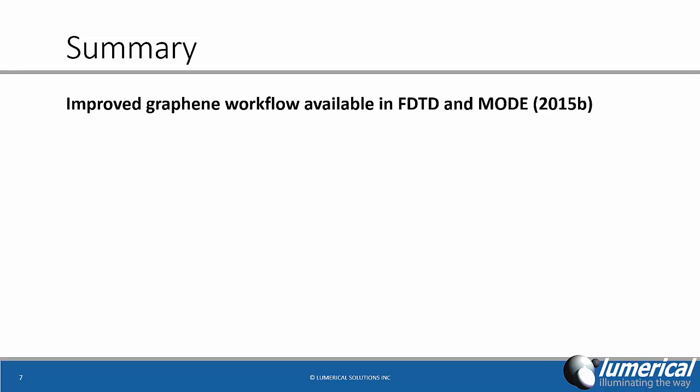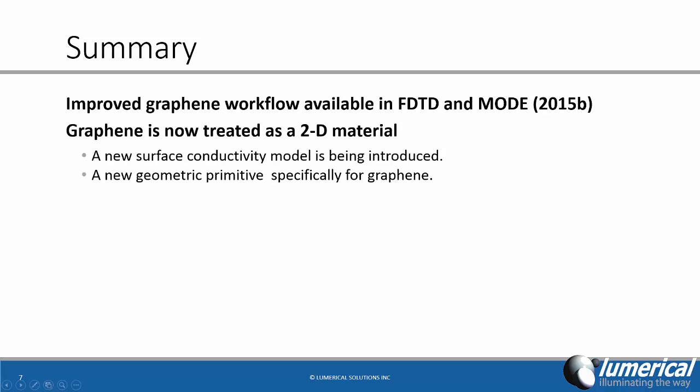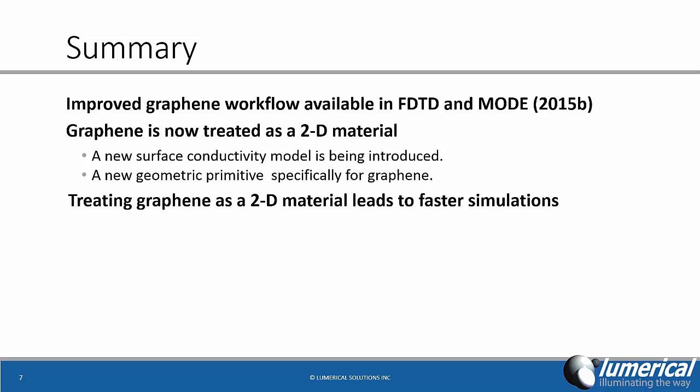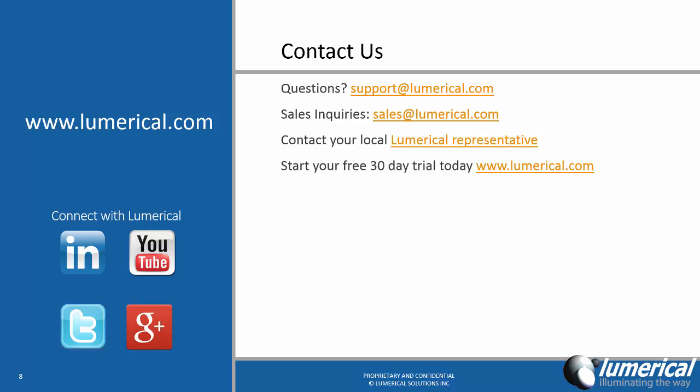In summary, a new graphene modeling workflow will be available in the 2015b releases of FDTD and mode. In the new workflow, graphene is now treated as a two-dimensional material with a surface conductivity. We have been able to demonstrate that this approach leads to faster simulations. If you have any questions about the new graphene functionality, please do not hesitate to send us an email to support at Lumerical.com.